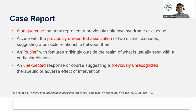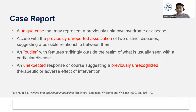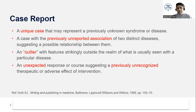A case report is a unique case that presents a previously unknown syndrome or disease. Most of the time you'll be looking at a previously unreported association of two different diseases. It could be a drug-drug interaction, a disease-disease interaction, an uncommon presentation of a common disease, or a common presentation of a unique disease. There could also be some unexpected response or diagnosis which has not been reported before.